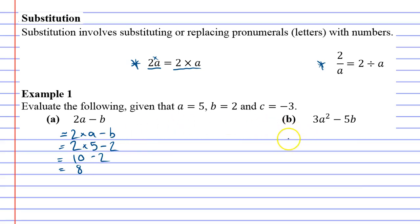Let's move on to question b now, and write our multiplication in place, so it's 3 times a squared minus 5 times b. Remembering that numbers next to pronumerals have hidden multiplication between them. Now we're going to substitute, we said before a is 5 and b is 2.